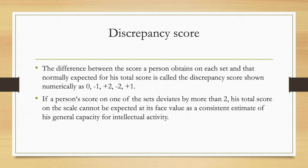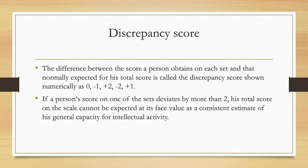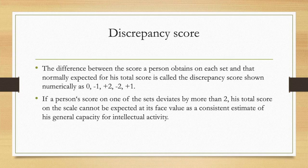What is the discrepancy score? It's the difference between the score a person obtains on each set and that which is normally expected for his total score. This is called the discrepancy score. As shown numerically, it could be 0, could be minus 1, could be 2, minus 2, like that.